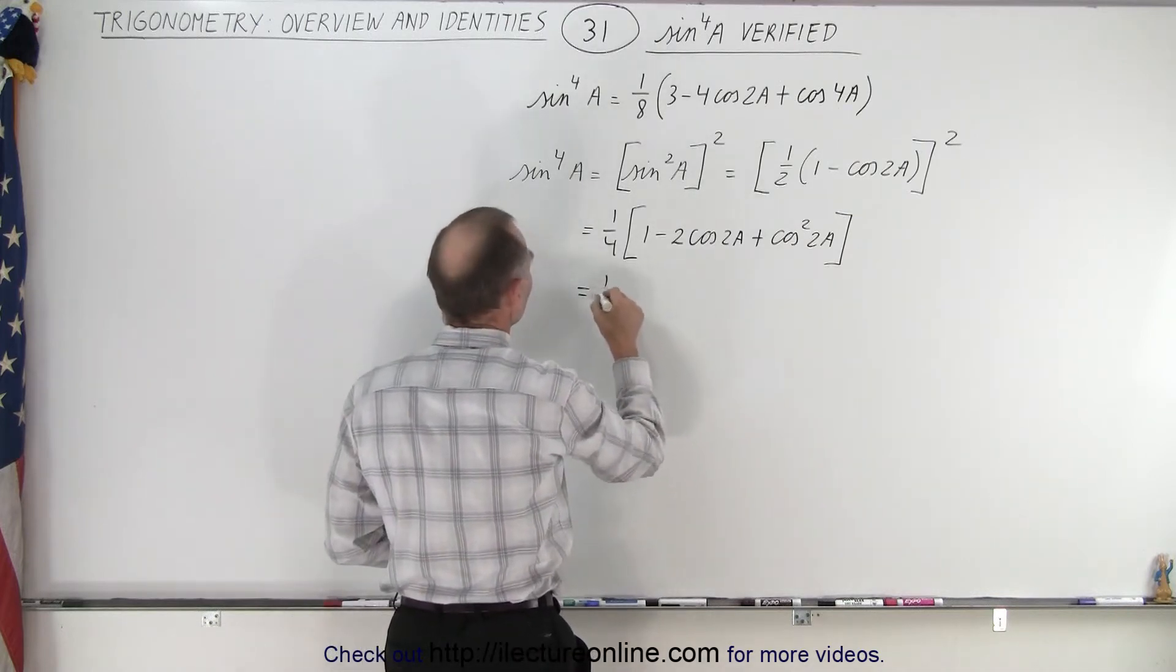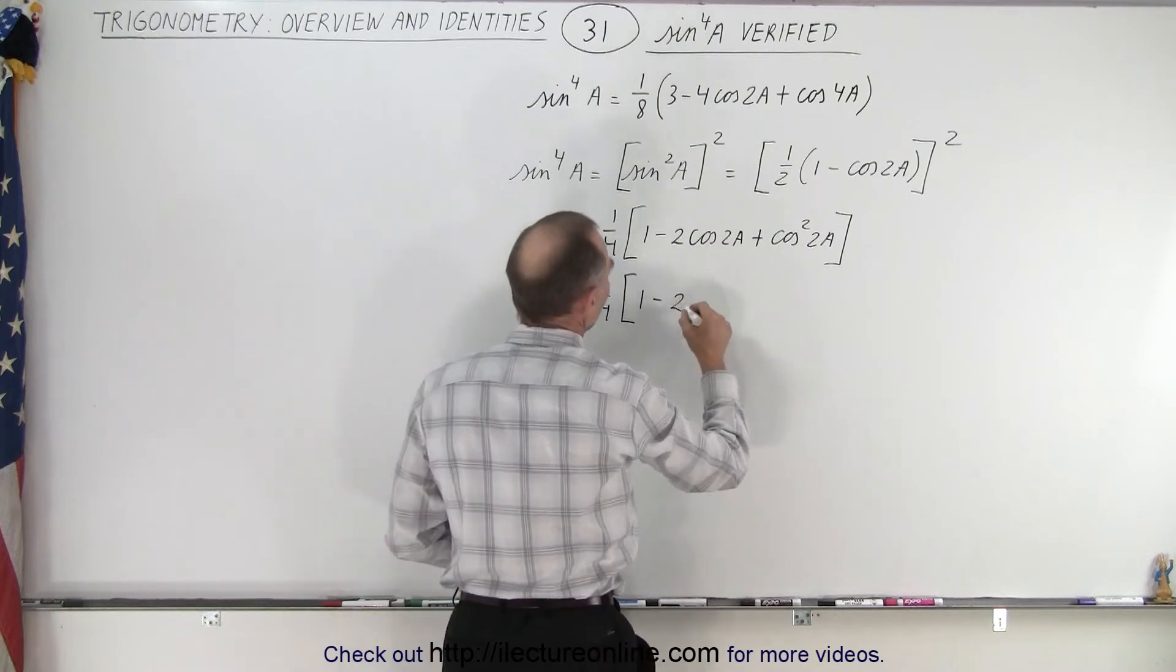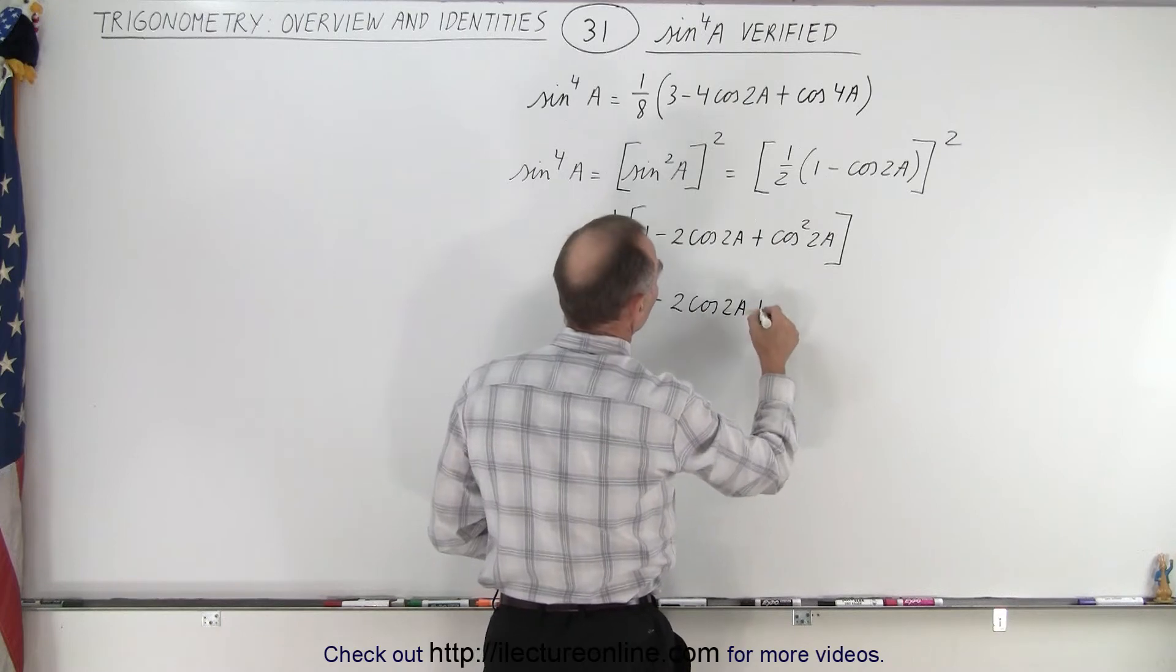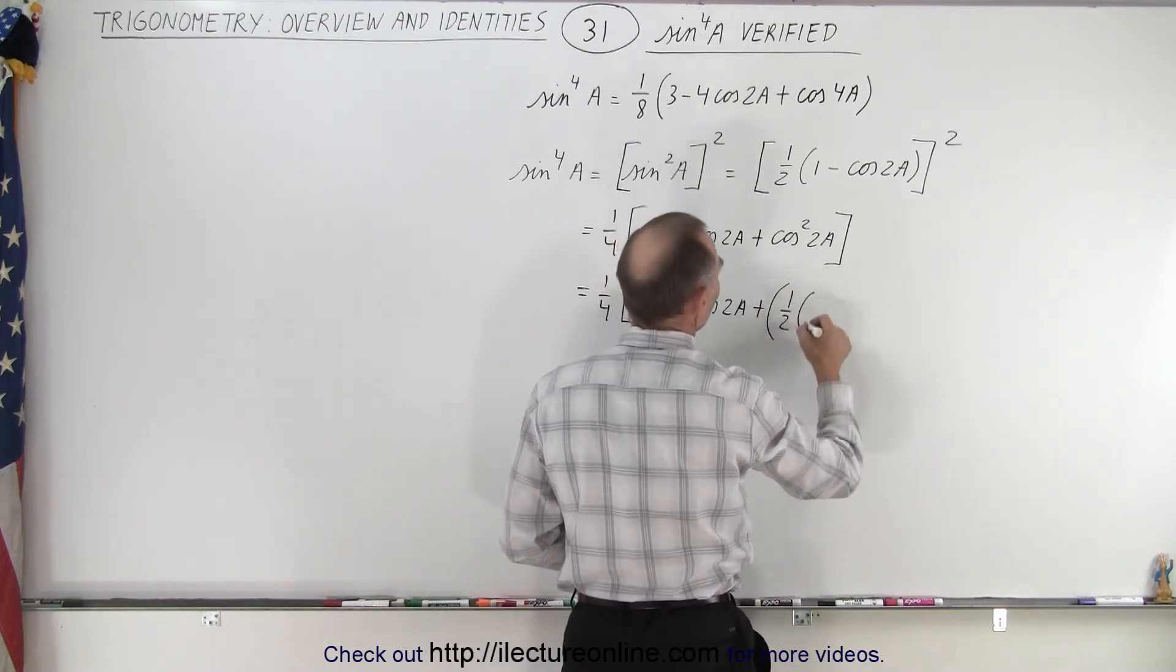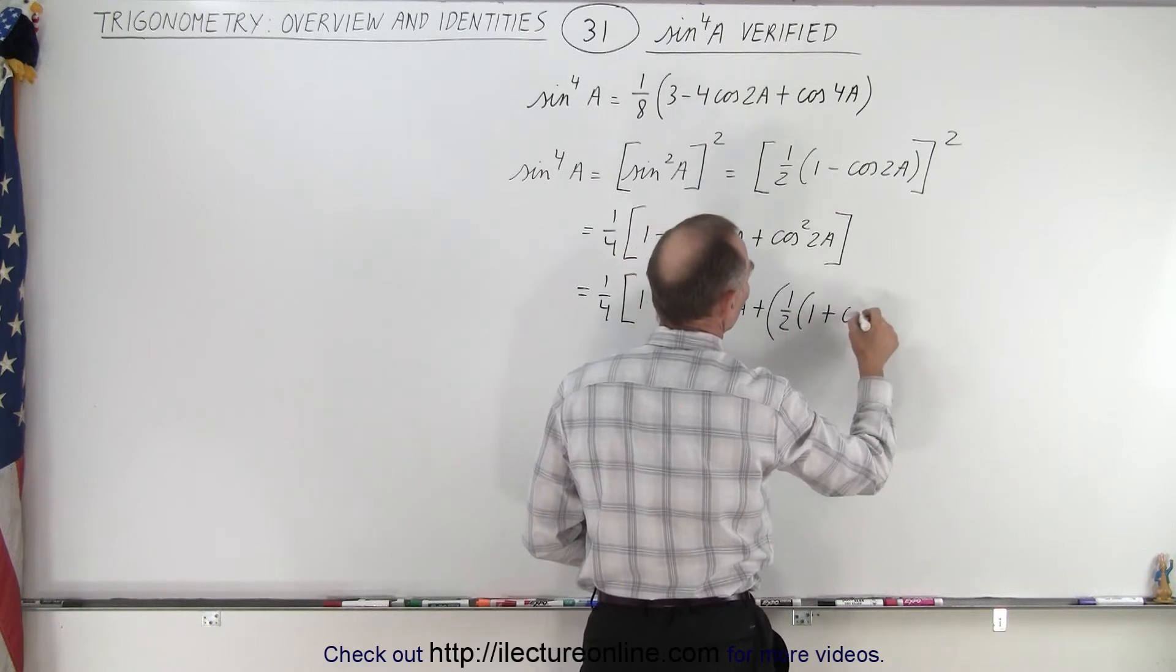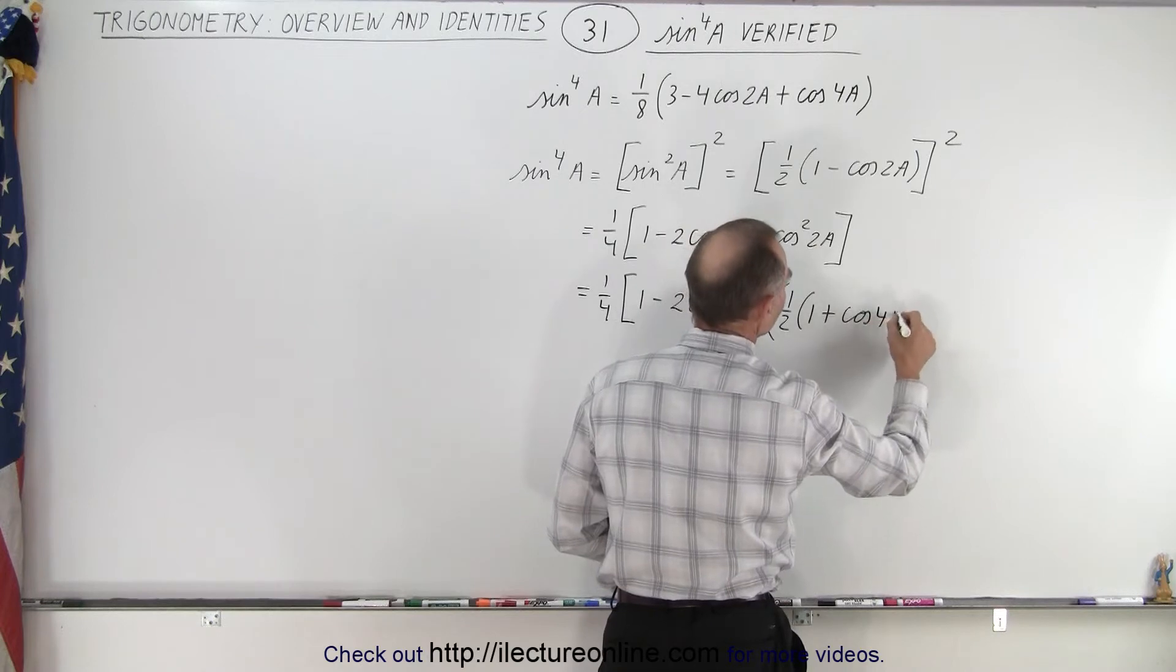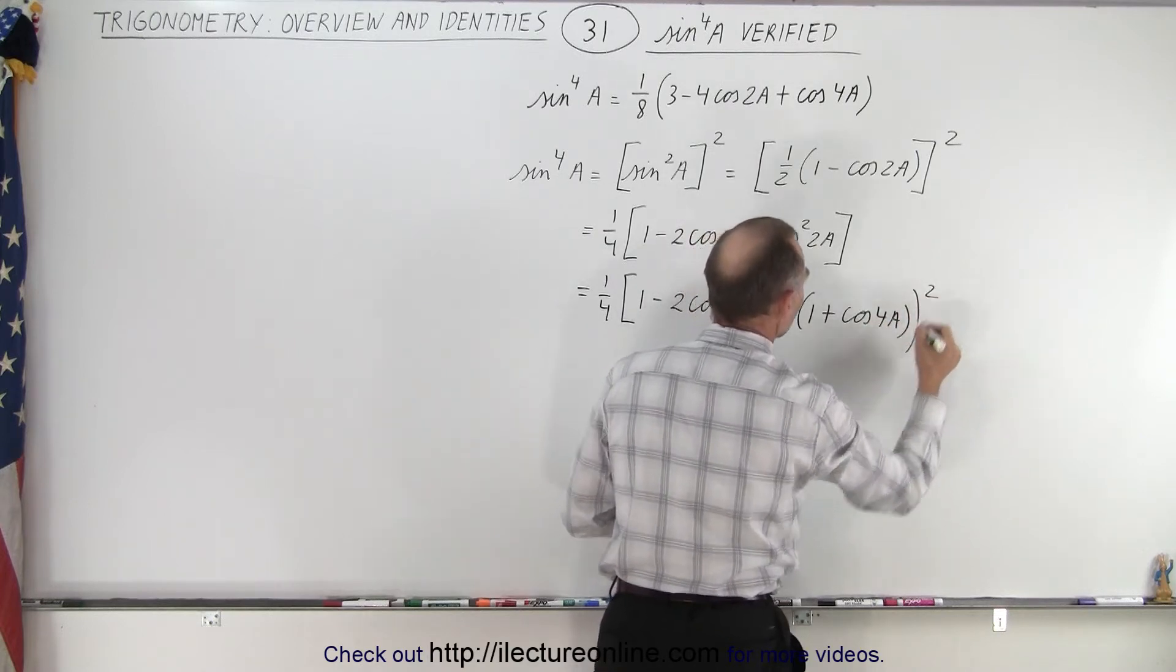So this can be written as 1/4 times 1 minus 2 times the cosine of 2a plus, here we can write 1/2 times 1 plus the cosine. Instead of 2a now, we're going to have 4a twice the angle, like this, and of course that whole thing is still squared.